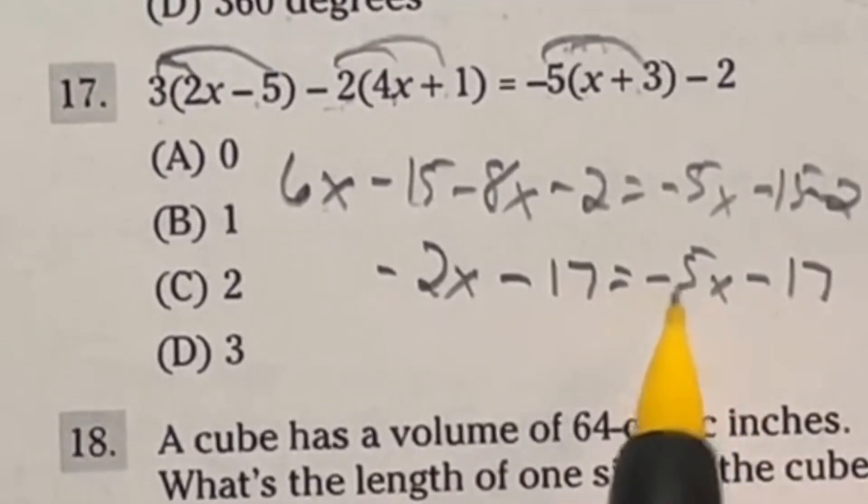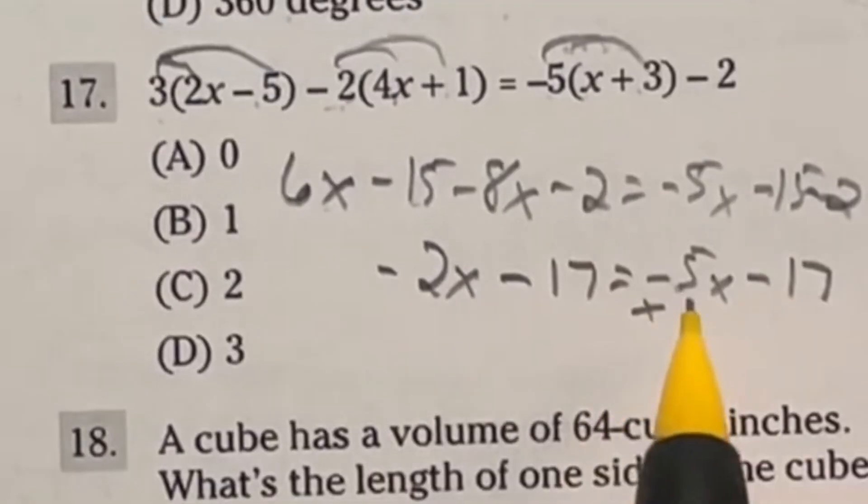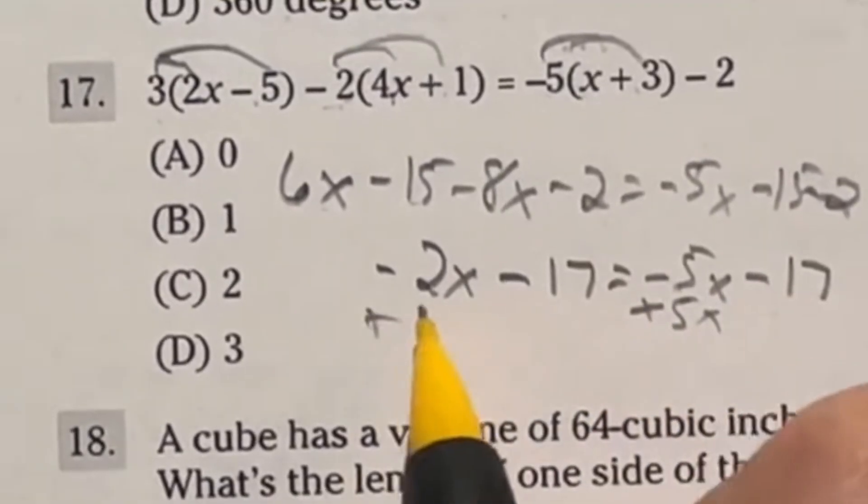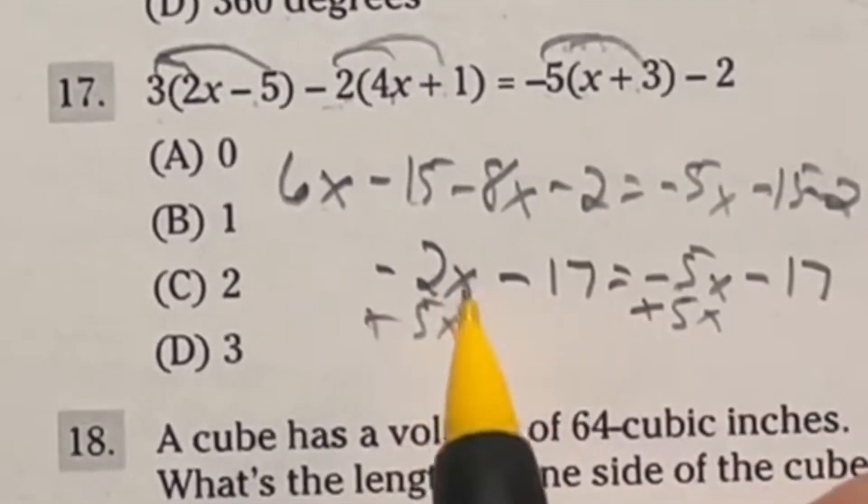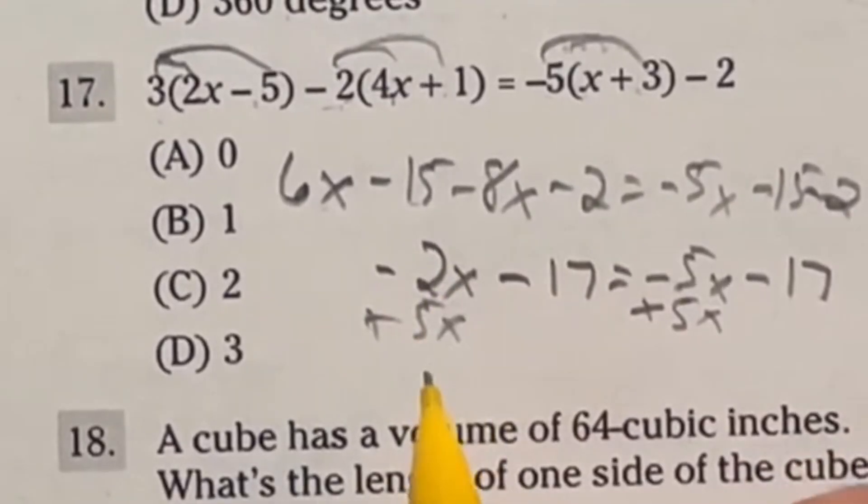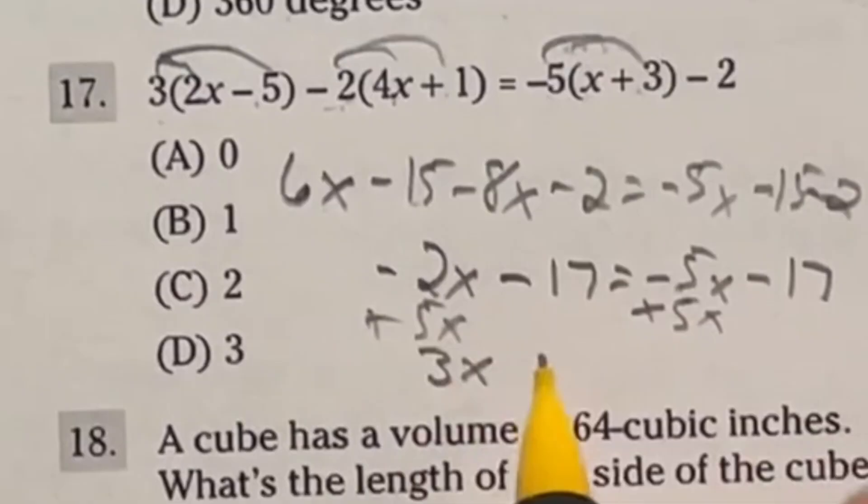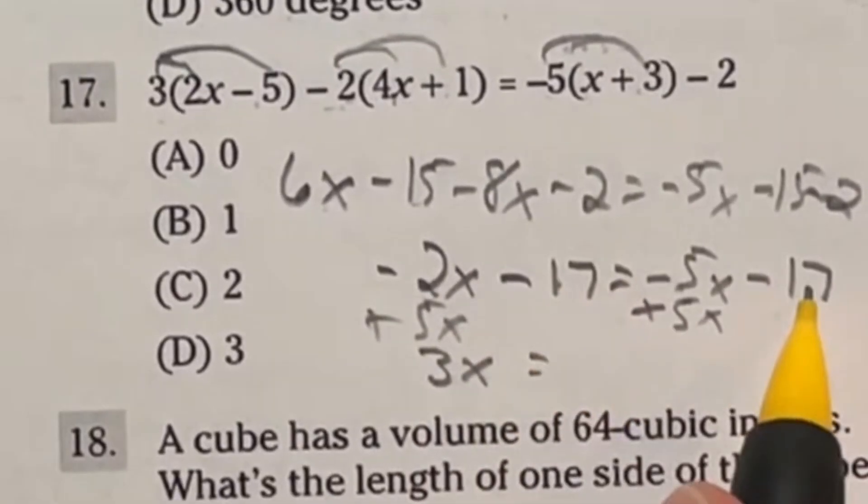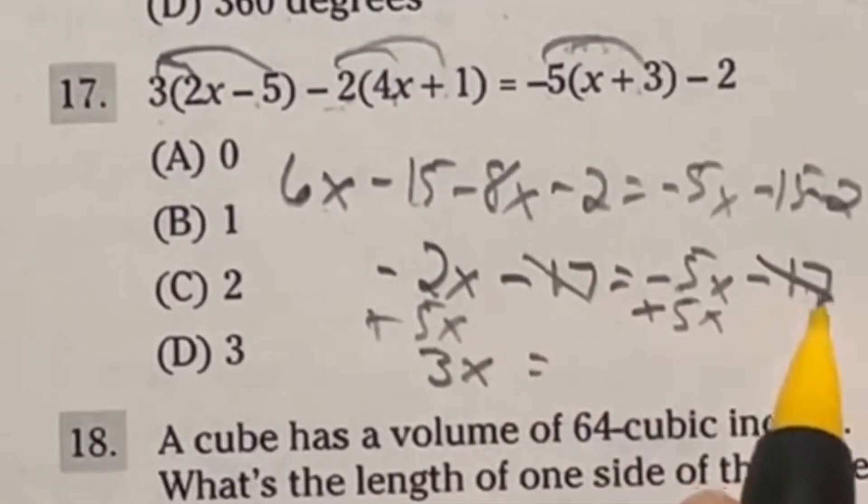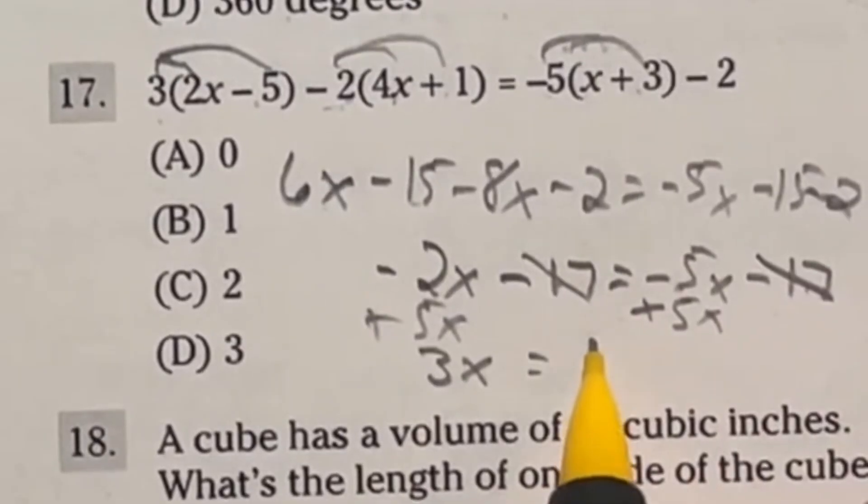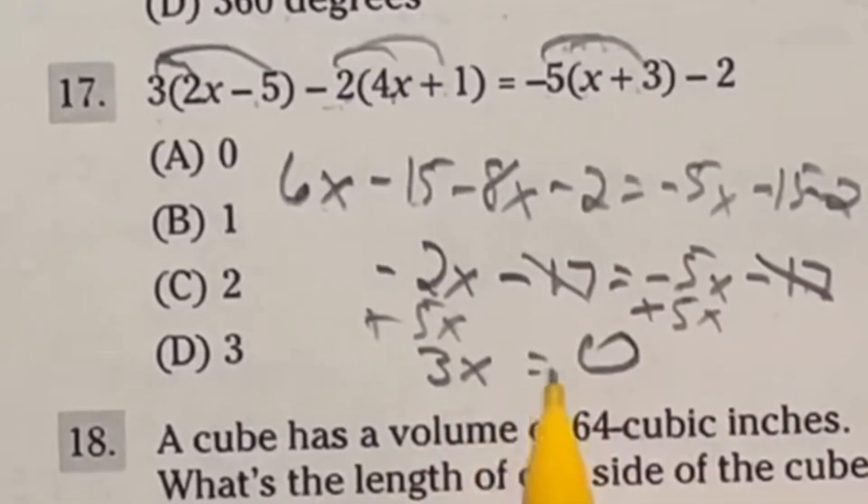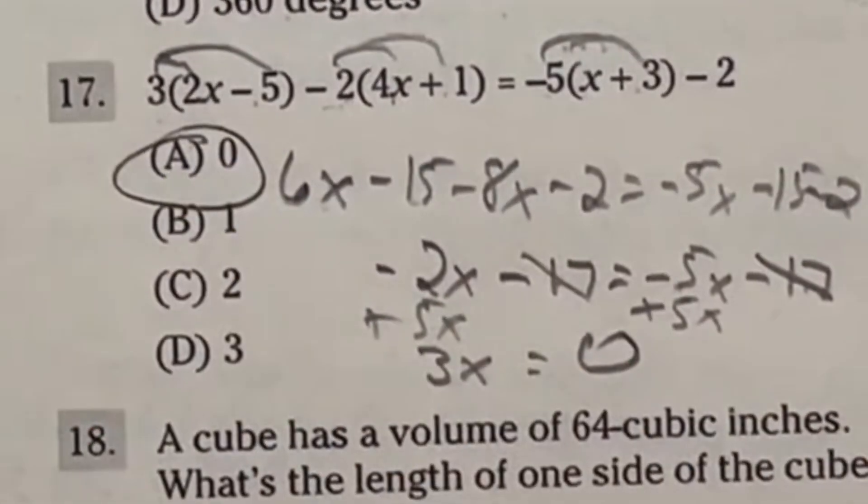Looking at this, if I add 5x to both sides, that's going to cancel out and leave us with 3x over here. And if I add the 17 to this side, holy cow, they're going to cut out entirely, and that's going to leave us with a 0. Divide both sides by 3 and x is still going to be 0. That's going to be our final answer, x equal to 0.